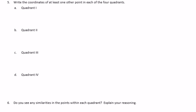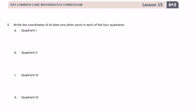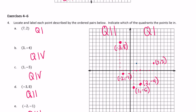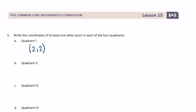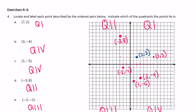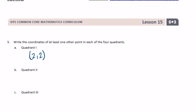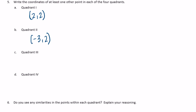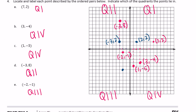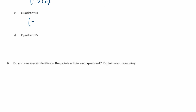Number 5: write the coordinates of at least one other point in each of the four quadrants. For quadrant 1, let's plot (2, 2) — it could be anywhere in quadrant 1, so there are lots of different right answers. For quadrant 2, let's plot (-3, 2) — as long as the x-coordinate is negative and the y-coordinate is positive. For quadrant 3, let's plot (-2, -6) — both x and y are negative.